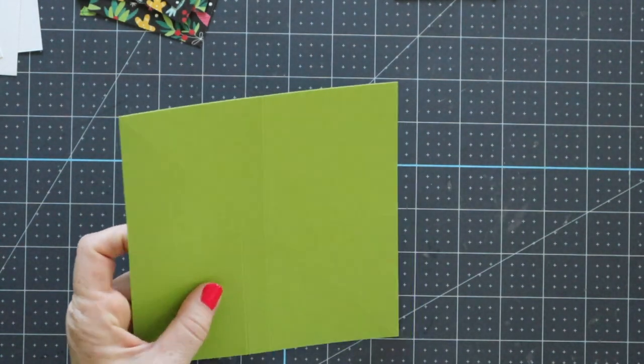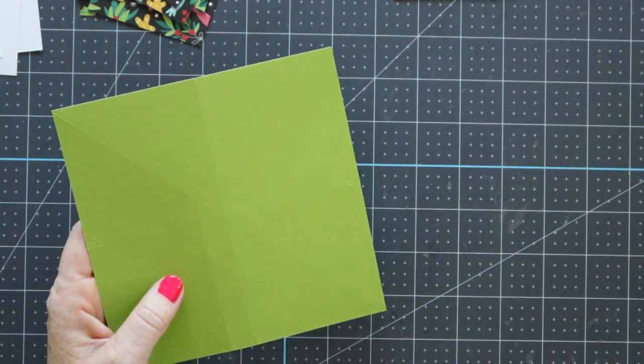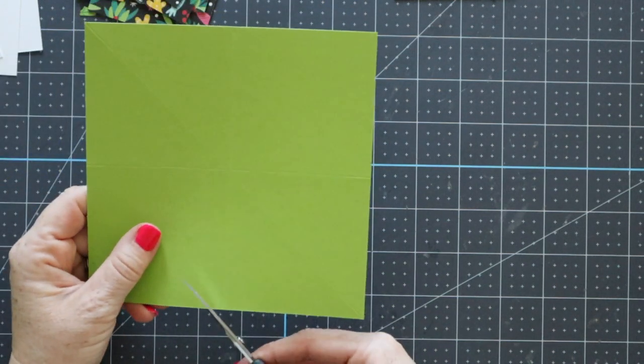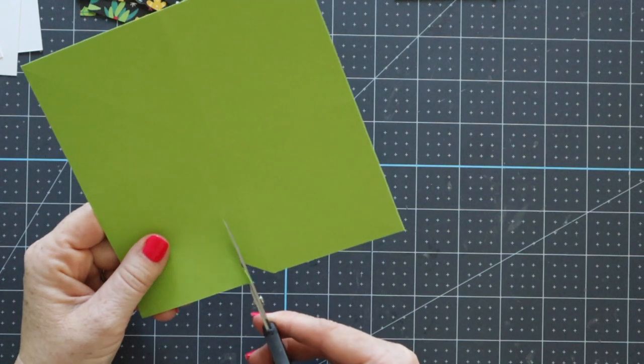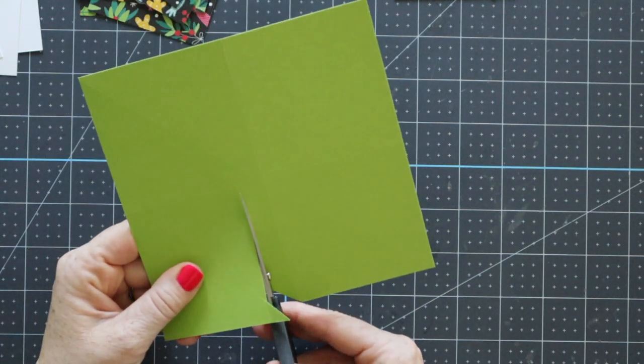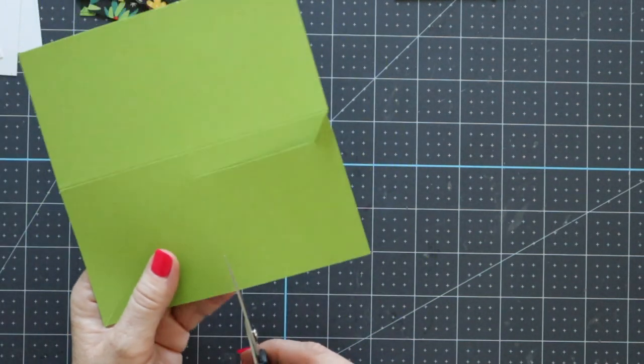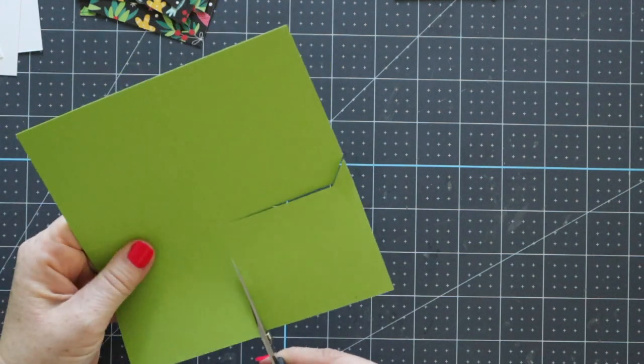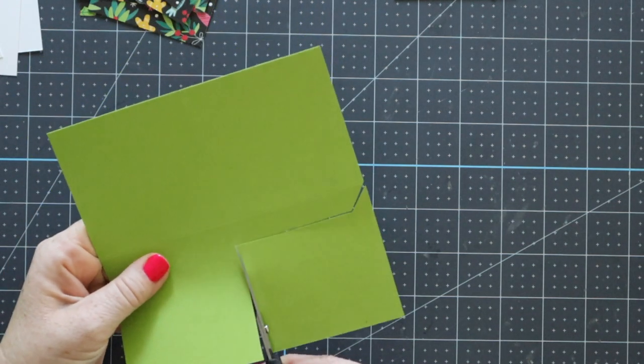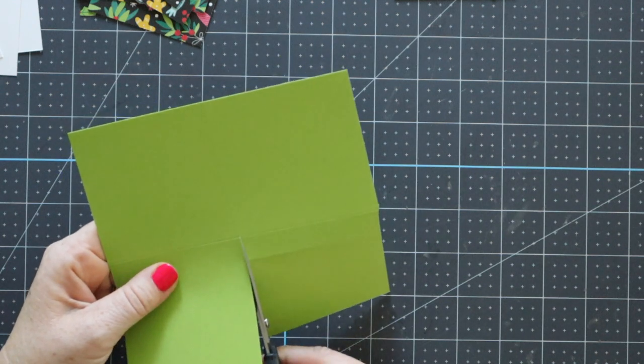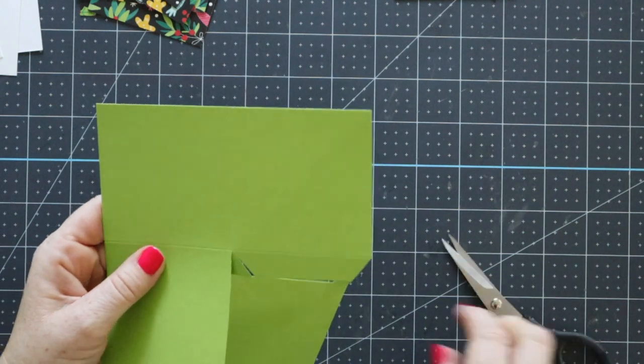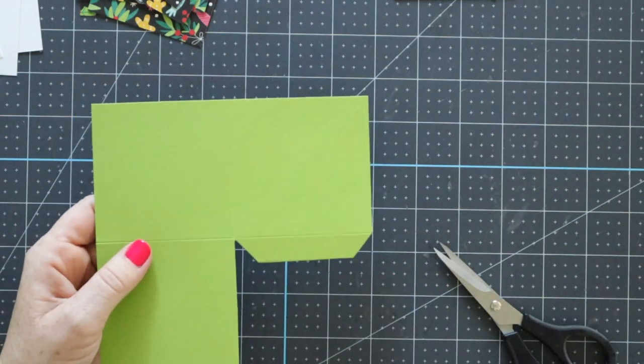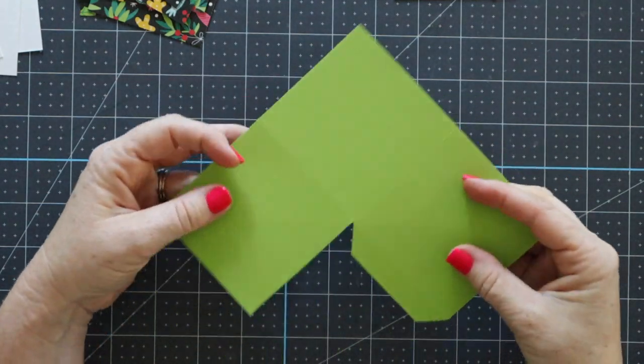We're going to do four of these. I'm going to do this whole process again for you so you can see it two times. Then you're going to trim away this excess square down here where you did that 2 1/2 inch score mark. We're trimming away and cutting at a pretty serious diagonal so that this will be able to fold.